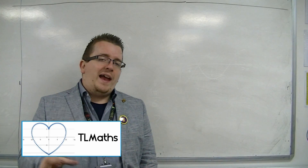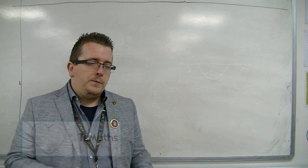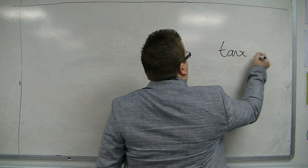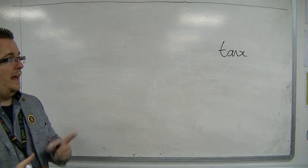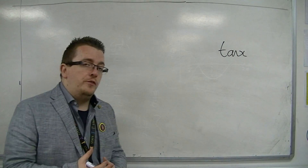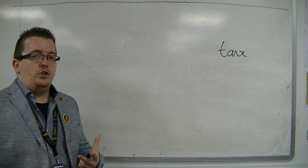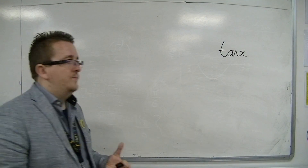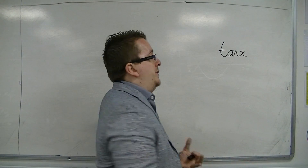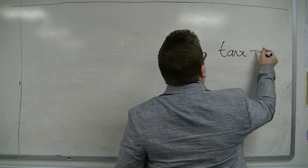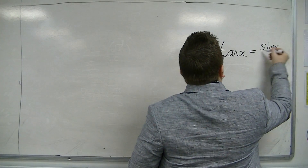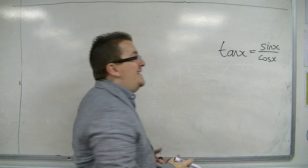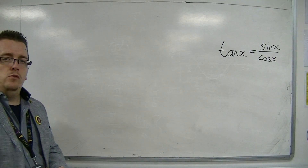Tan x is a special function because, as one of the trigonometric functions, it's a combination of the other two — sine and cosine. In fact, it's the ratio of the two. Tan x is sin x over cos x, and this is a very important identity that you need to know.